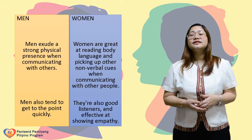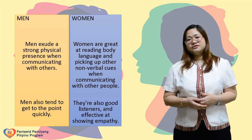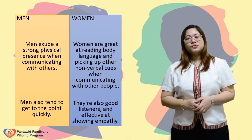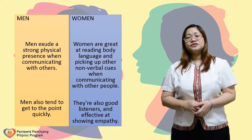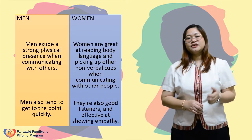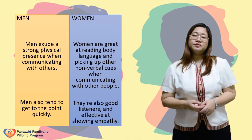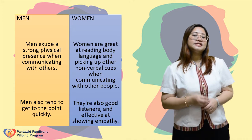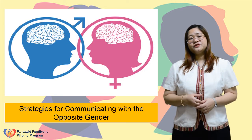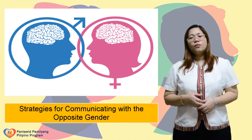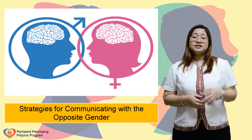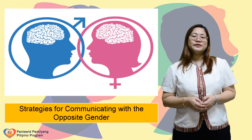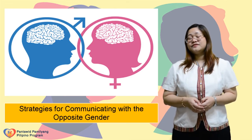For men: men exude a strong physical presence when communicating with others. The way they stand or carry themselves displays confidence and power, as does their body language. Men also tend to get to the point quickly. However, this strength can also turn into a weakness when they get too blunt — men can be seen as insensitive to others and overly confident in their thoughts, ideas, and selves. Now, how do we achieve effective communication between genders in the workplace? We need to find a way to bridge the communication gap that exists.